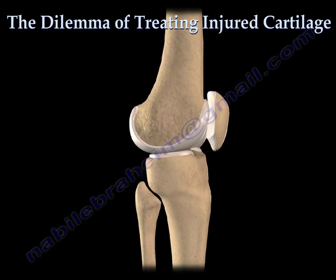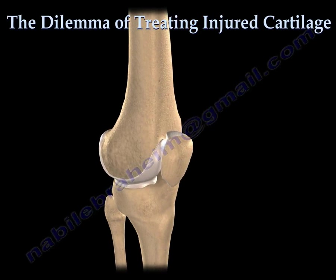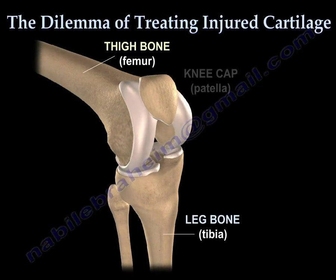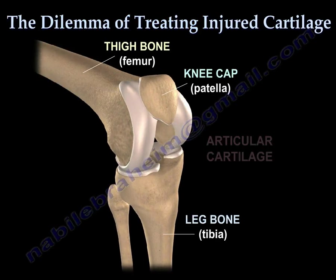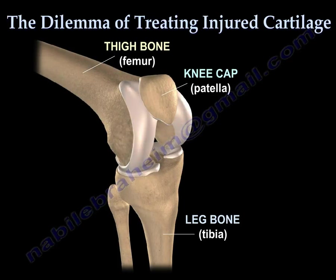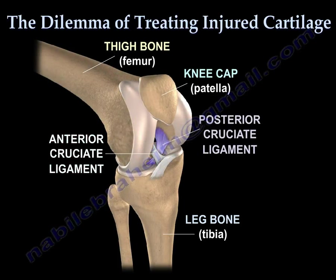The knee is the most common joint in the body with cartilage injury issues. The knee joint is composed of a femur, a tibia, and a patella. There are two types of cartilage in the knee joint: the articular cartilage, and the meniscus, which is a shock-absorbent cartilage. There are also important ligaments within the knee joint, the anterior cruciate ligament and the posterior cruciate ligament.